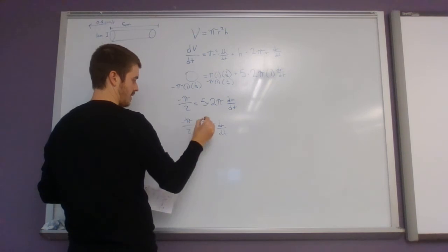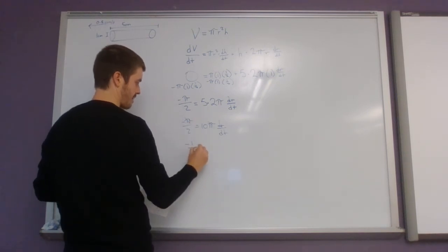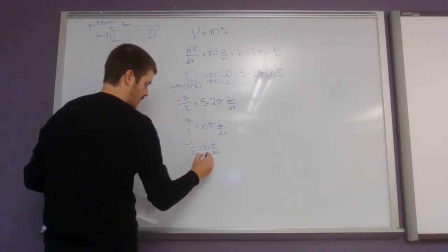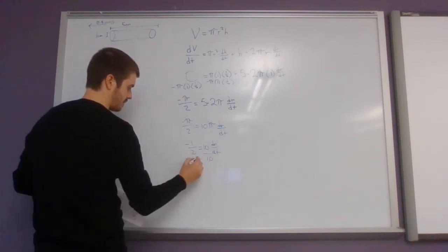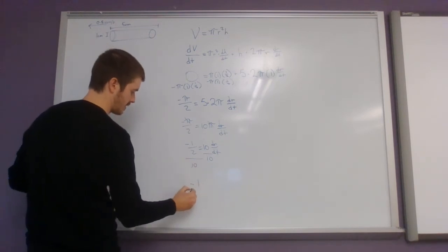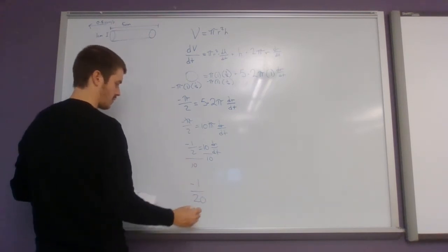Okay, we've got pi on both sides. Get rid of that. Divide both sides by 10. So negative 1 half divided by 10 is negative 1 over 20.